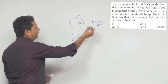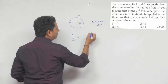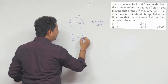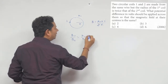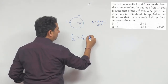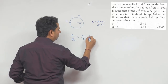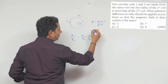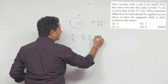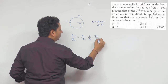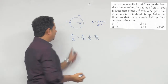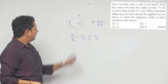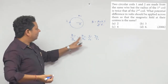इस case में B1/B2 हो जाएगा: N1/N2 multiplied by I1/I2 multiplied by R2/R1 — क्योंकि R के साथ inversely proportional है। यह B1 और B2 की value हो जाएगी।